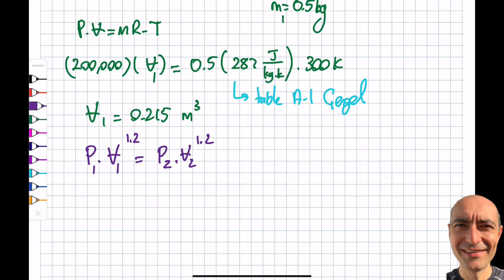The good thing is, I know P1 by P2. It is twice, so this is two times P1. So you can see P1's cancel over here. And the V1 is known, 0.215. You simply go ahead and find your V2 from here. And when you do it, you get 0.12 meter cubed.